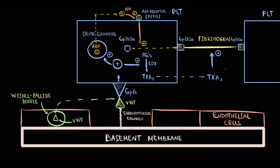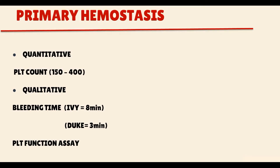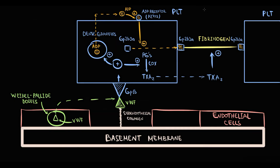Up until this point is primary hemostasis. To assess primary hemostasis, we use three values, which can be divided into two groups. The first group provides assessment of quantitative platelet abnormalities, and that is the total platelet count — basically we assess the quantity of platelets in the bloodstream, because without a sufficient amount of platelets, a platelet plug and thereby a thrombus cannot be formed.